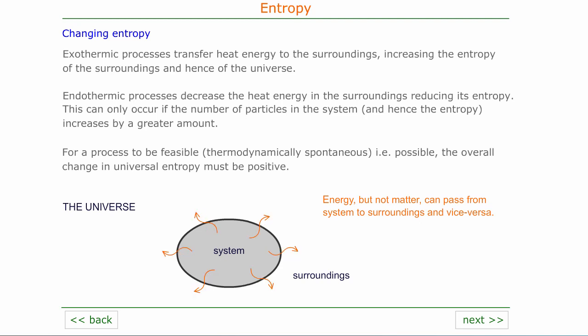Processes may be either exothermic or endothermic in terms of heat energy. An exothermic process will transfer heat energy to the surroundings from the system — the chemical potential energy of the system changes to heat energy which then goes to the surroundings. This increases the entropy of the surroundings and hence the entropy of the universe, so it's a favourable process. An endothermic process, however, decreases the available heat energy in the surroundings, meaning the entropy of the surroundings is reduced. This can only occur if the number of particles in the system — and hence the entropy — increases by a greater amount. For any process to be feasible, which we say is thermodynamically spontaneous, the overall change in universal entropy must be positive.